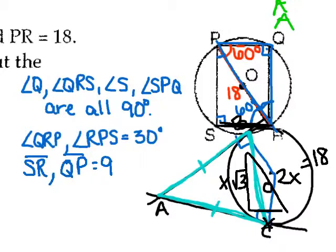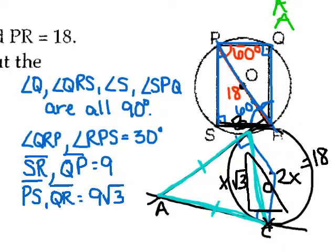And then, X square root of 3, that would be these sides here. So, PS and QR would be 9 square root of 3. Getting real technical on you there.